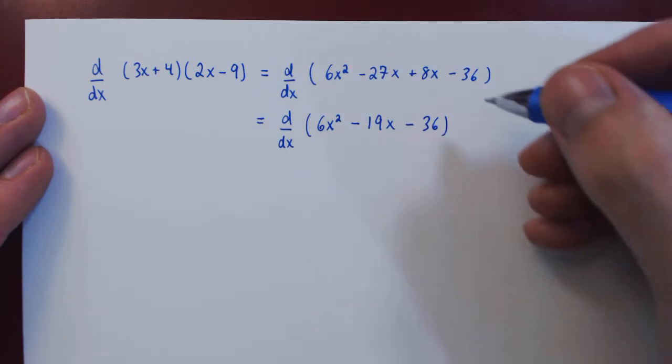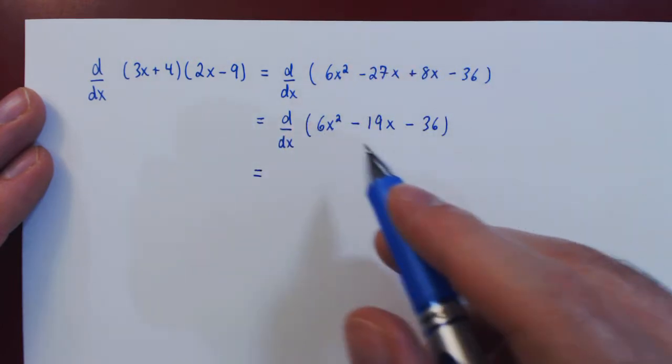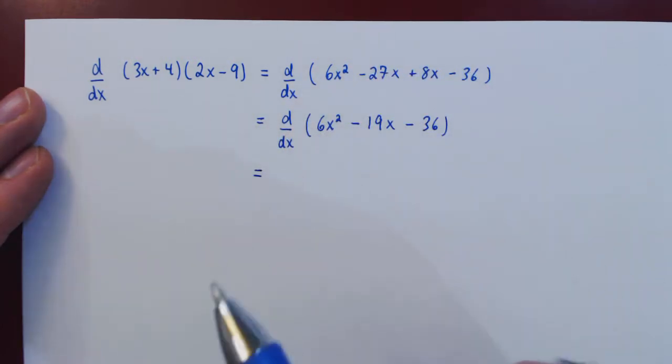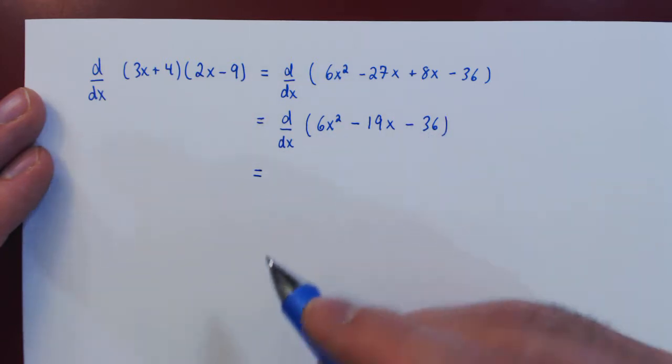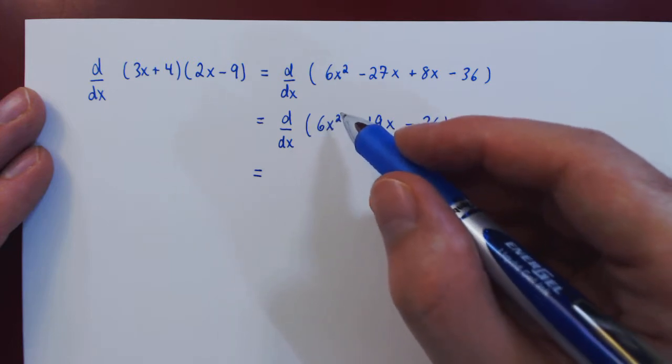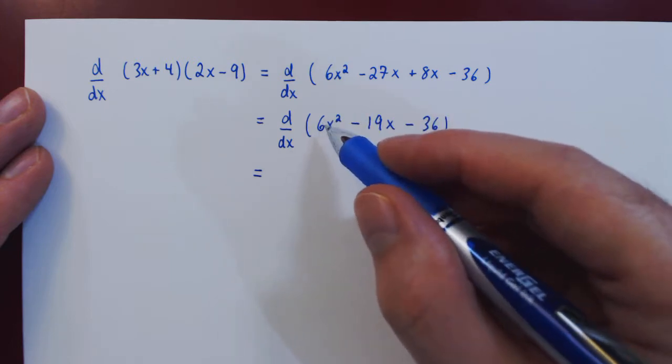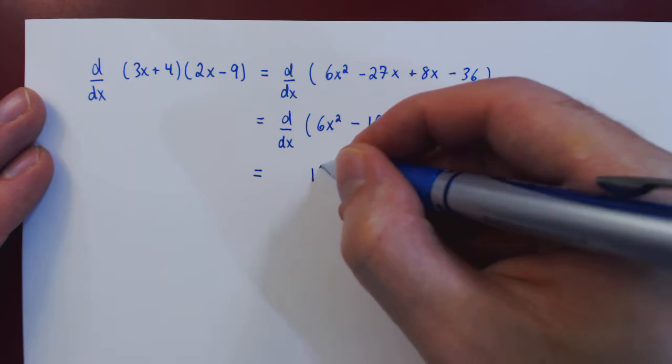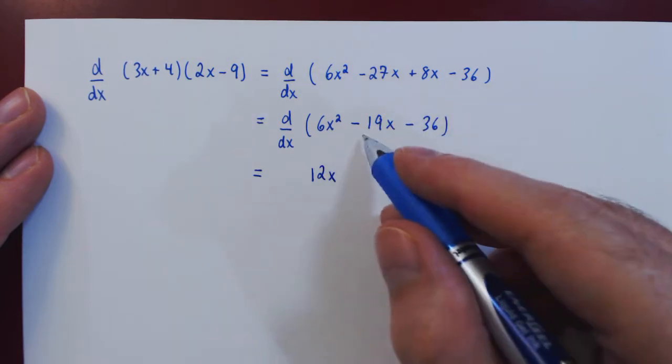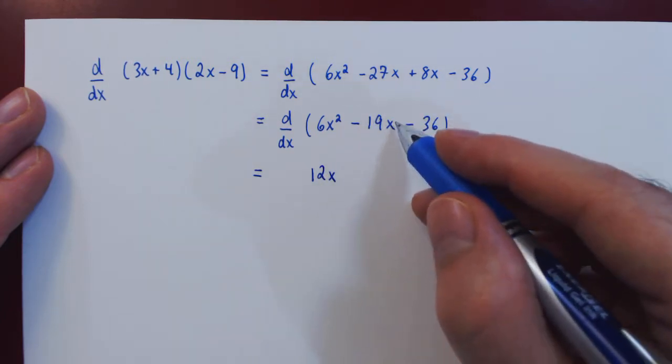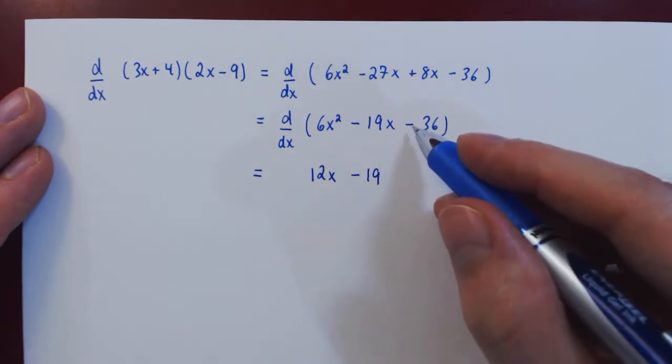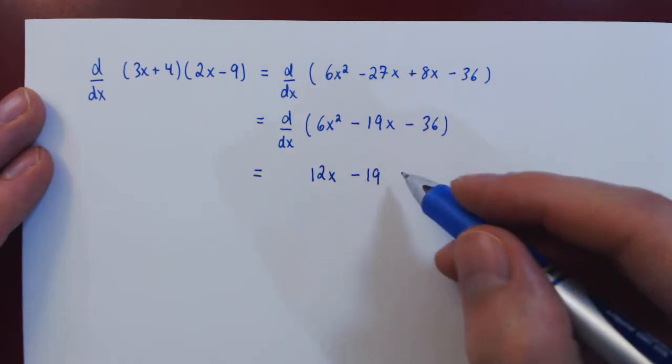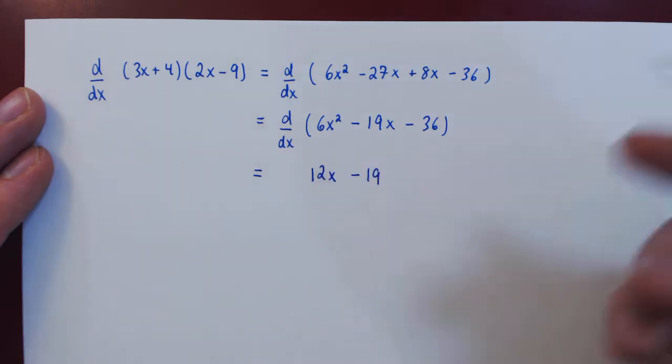And now we can differentiate using the constant multiple rule, the constant rule, the sum difference rule, and the power rule. So the 6 will stay there times by the power rule 2x. This will give us 12x. And minus 19 times 1. So minus 19. Let's not bother with minus 0. So we have now our final answer.